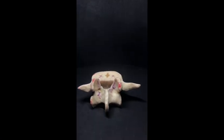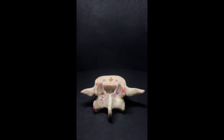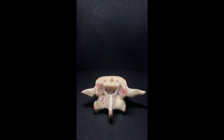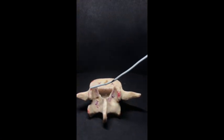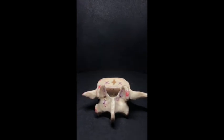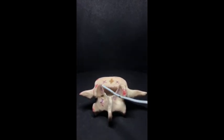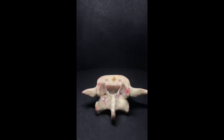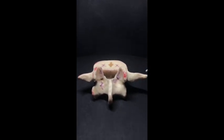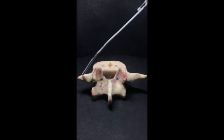We are now looking at the posterior aspect of the L5 vertebral body. We are looking at the superior articular processes which articulate with cartilage on the inner surface of each facet. We have the transverse process right, left.